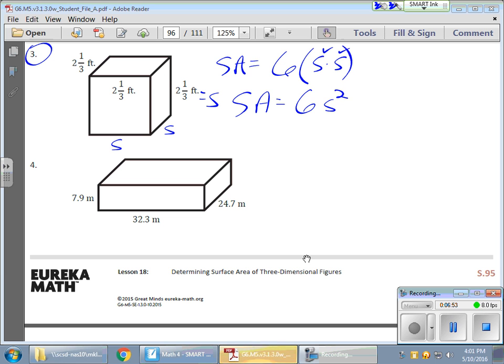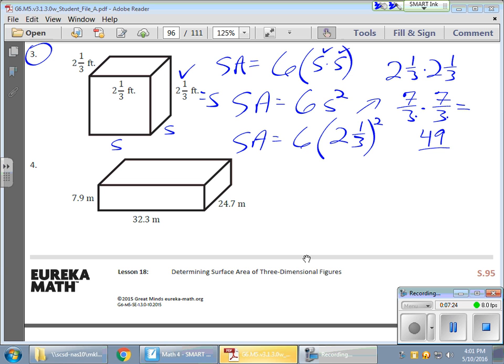So let's solve this thing. S equals 2 and 1 third. So what does that look like? That's going to be 6 times 2 and 1 third to the second power. So I need to solve this over here on the side. I need 2 and 1 third times 2 and 1 third. That equals 7 thirds times 7 thirds. And if I were to multiply that, 7 times 7 gives me 49, 3 times 3 gives me 9. So I have 49 ninths. There you have it.